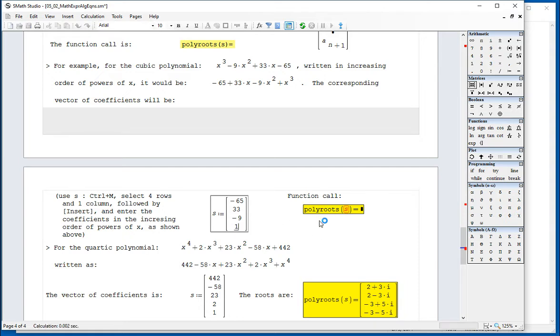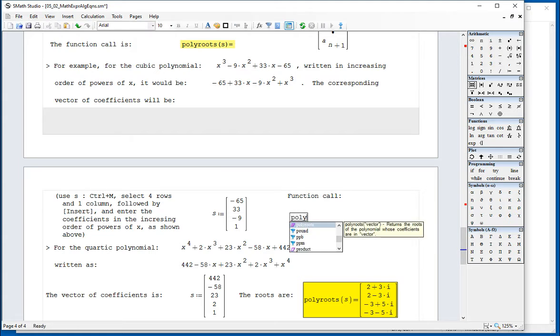And so having defined our vector, we just call function poly roots. I'm going to repeat that here. You just type poly roots parentheses s equals. And then it will find for you all the roots of a polynomial. In this case, one real one and two imaginaries.